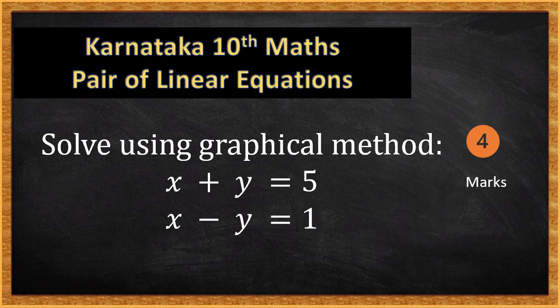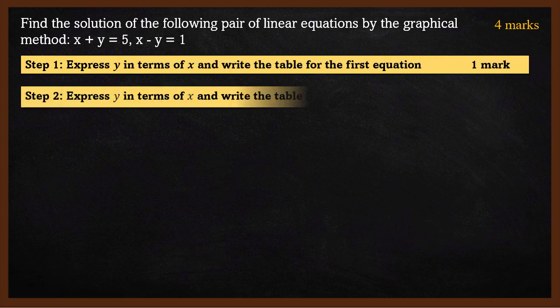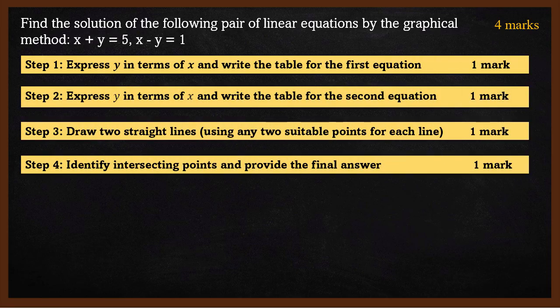This video covers question 4 on Pair of Linear Equations. We will use the graphical method to solve the equation. Find the solution of the following pair of linear equations by graphical method: x plus y equals 5 and x minus y equals 1. We will solve this in 4 steps, and each step counts as one mark in the exam.